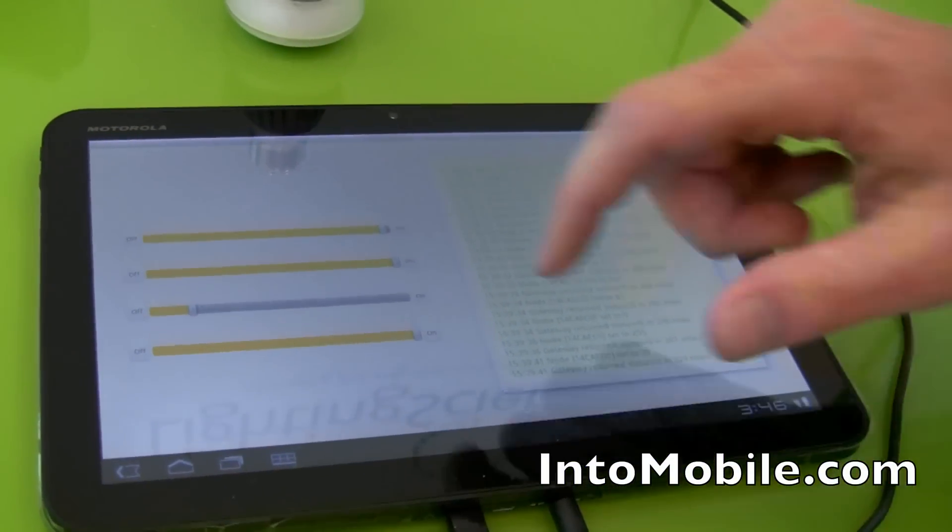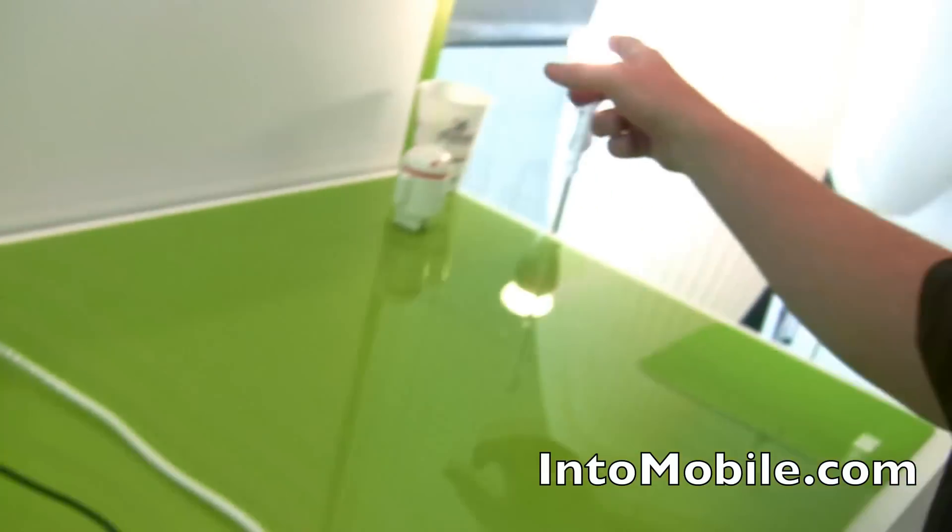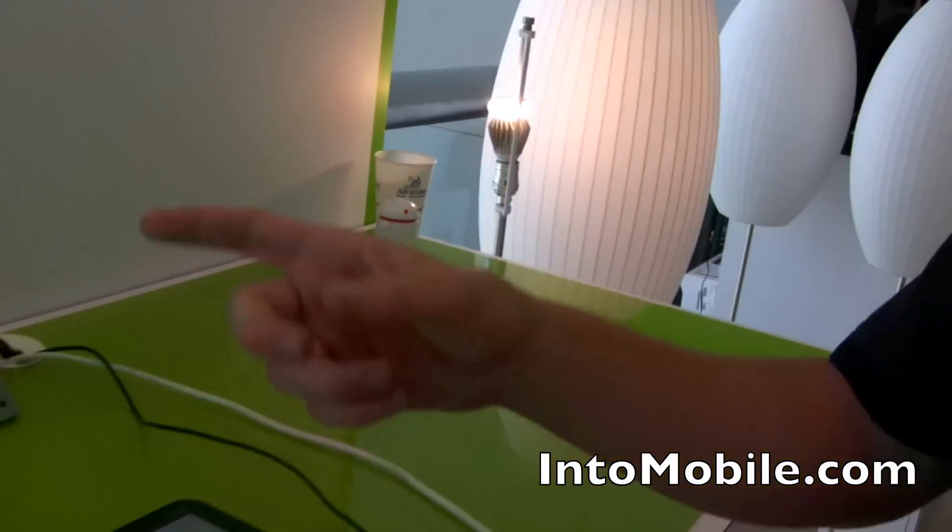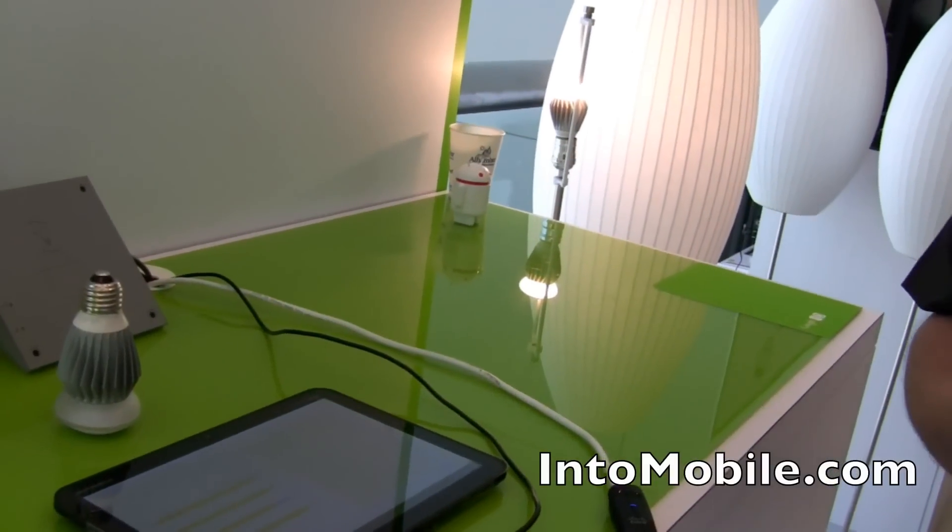We've done a demonstration app for this where we can dim a couple of the lamps around here. You can see one of them operating over here. I can change the intensity with the sliders on the screen. And there's other lights around the facility that we're controlling with this app as well.